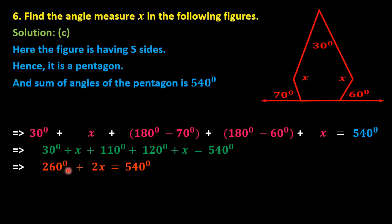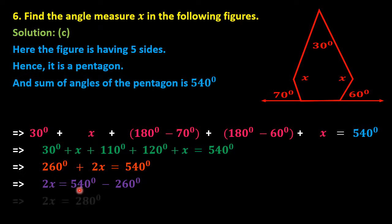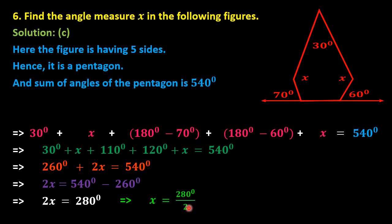Shifting 260 degrees to the right: 2x equals 540 minus 260, which gives 2x equals 280 degrees. Dividing by 2, we get x equals 140 degrees.